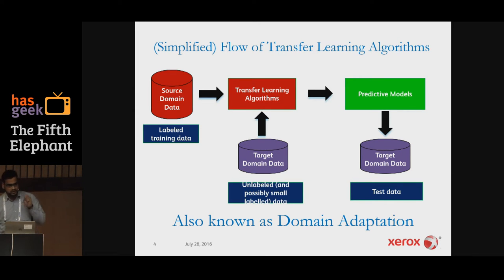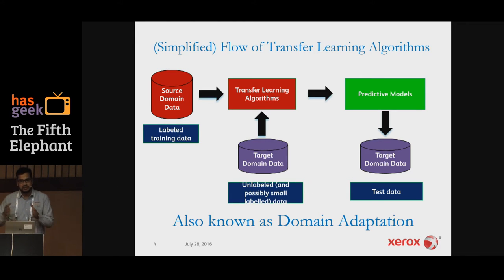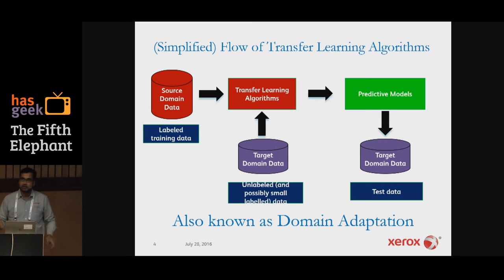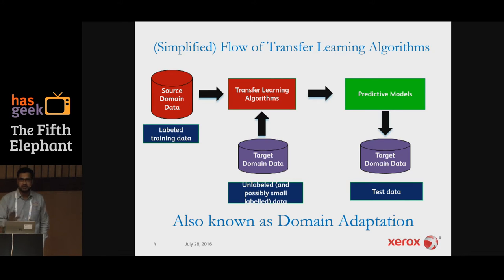Here's a simplified flow of transfer learning: there is a source domain with lots of labeled data, and a target domain with lots of cheap unlabeled data and possibly a small amount of labeled data. These are fed into a transfer learning algorithm that creates a predictive model applicable to the target domain — without requiring the large labeled datasets needed for source domain training. This is also known as domain adaptation.